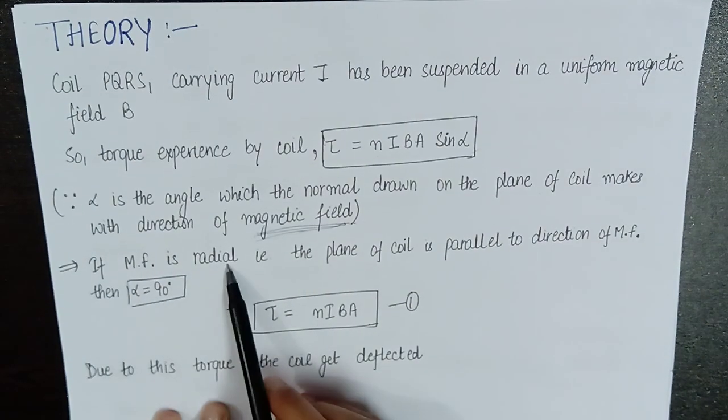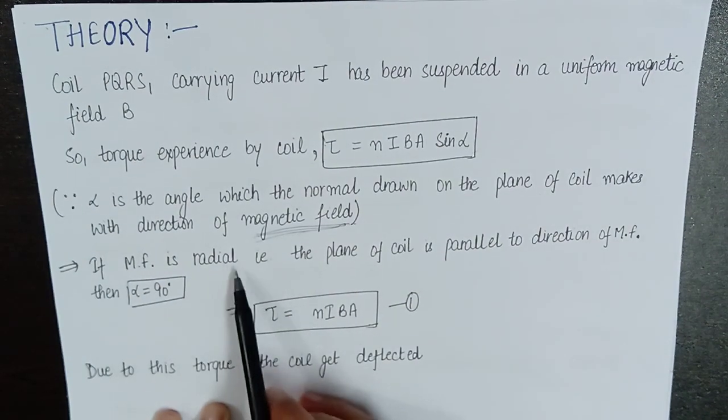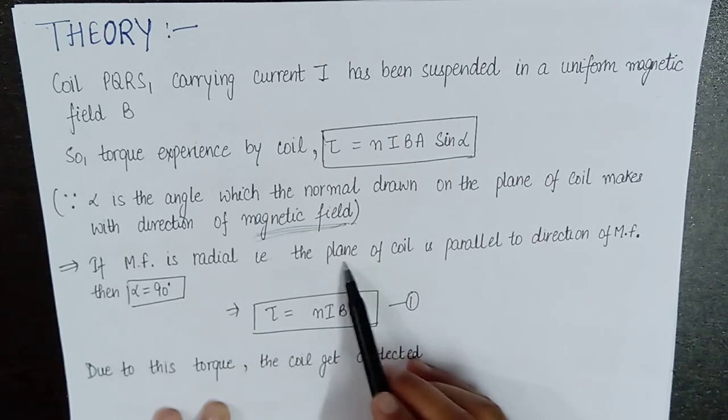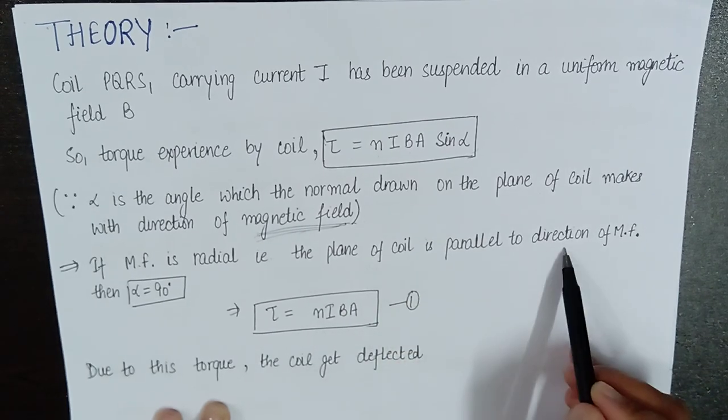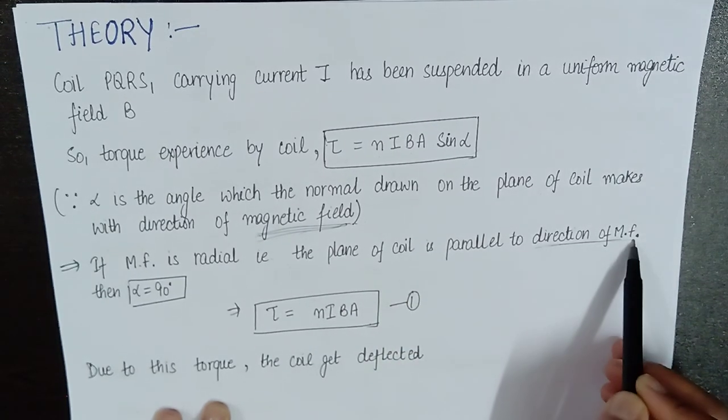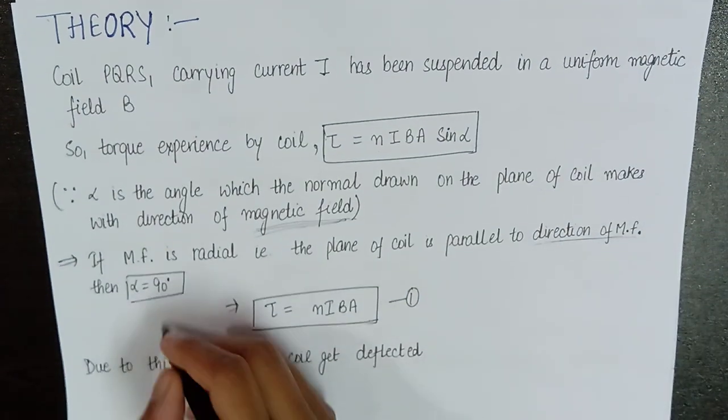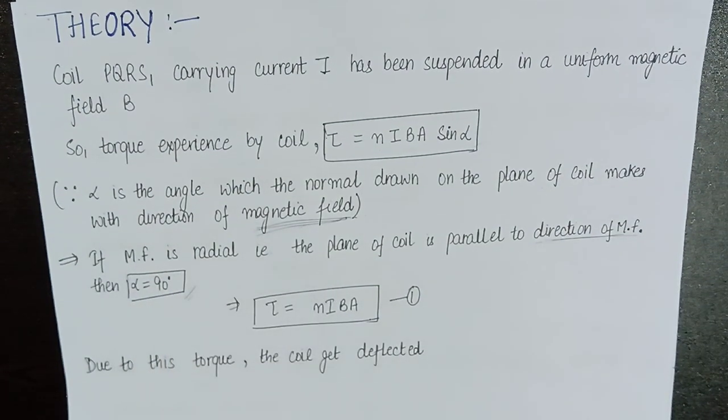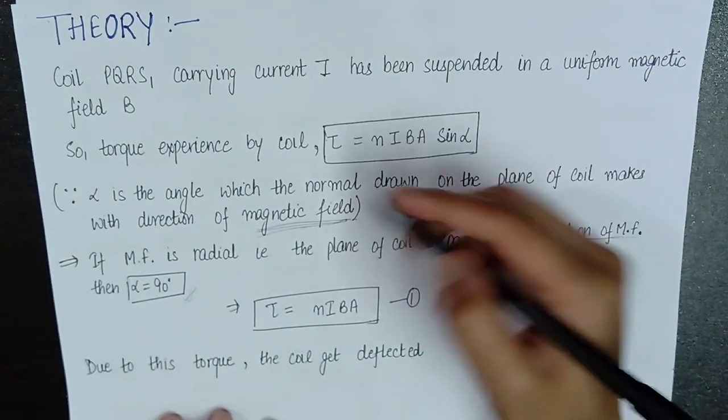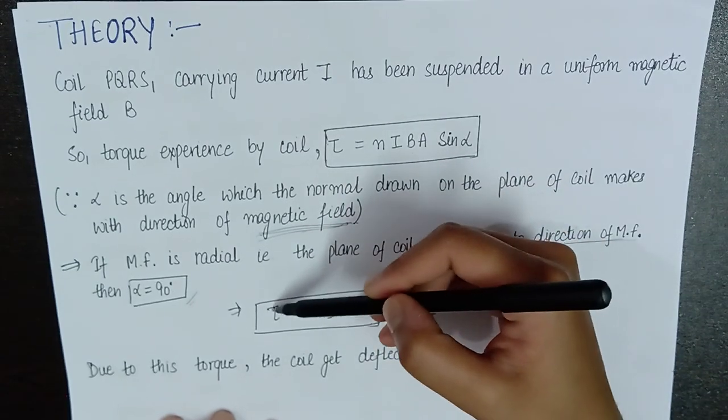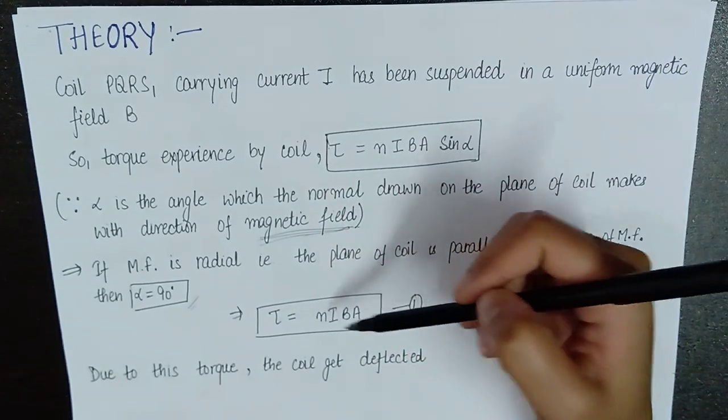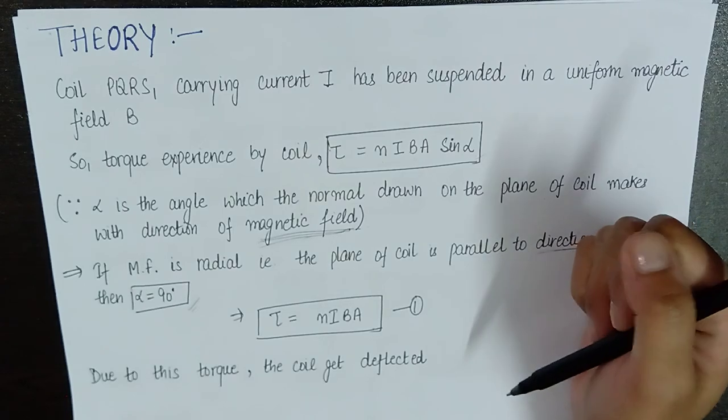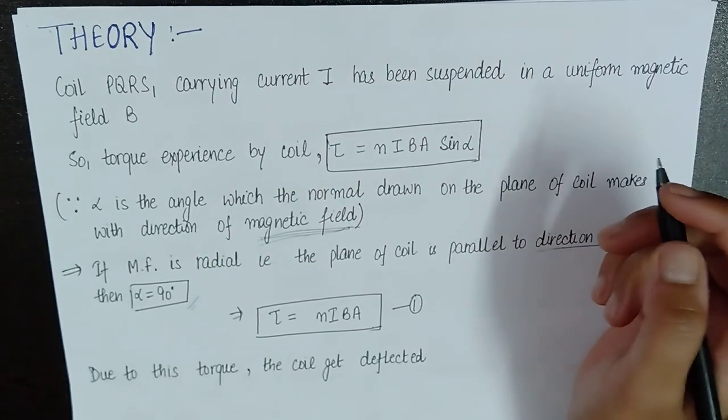We know that the magnetic field is radial. Radial means that we have already discussed that the plane of the coil is parallel to the magnetic field. So in this case, the alpha value will be 90 degrees. After substituting this value, the torque is finally NIBA.